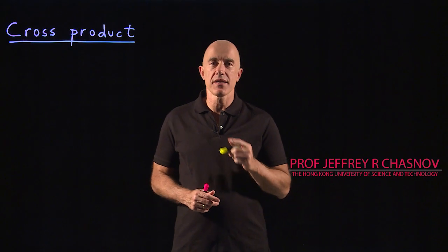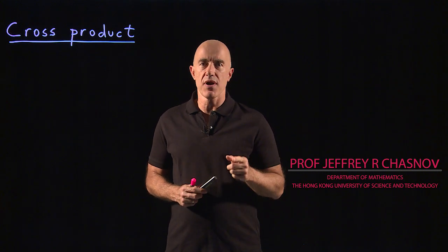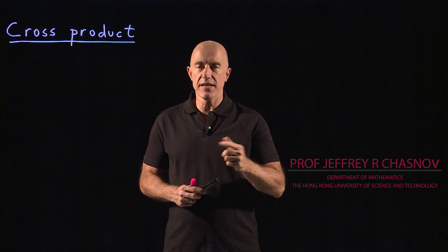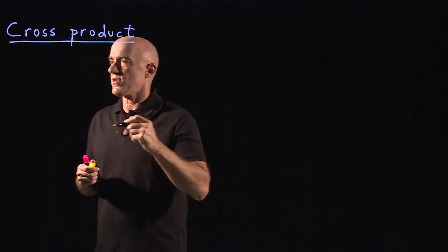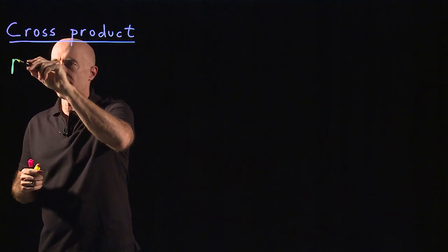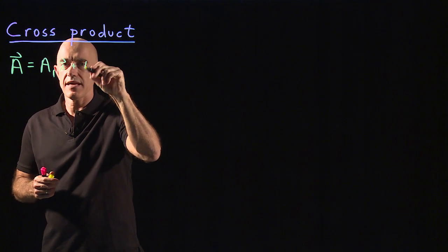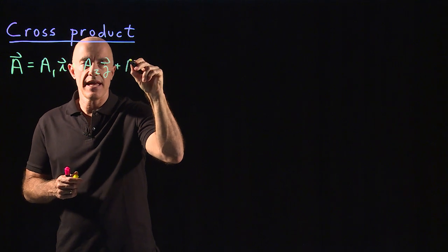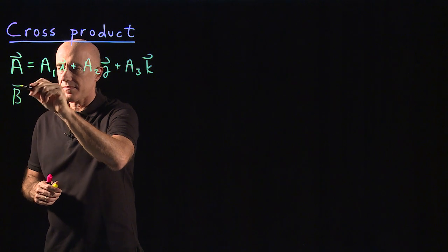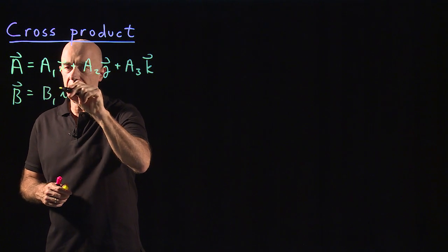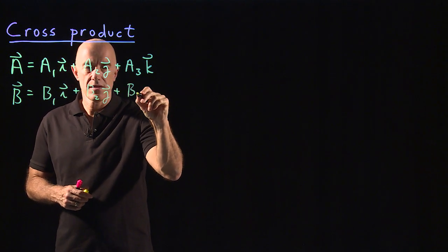We've talked about the dot product or the scalar product. In this video I want to talk about the cross product, or the vector product, because the cross product results in a vector. So let's start with two vectors. We have vector a, which is a1i plus a2j plus a3k, and we have vector b, which is b1i plus b2j plus b3k.